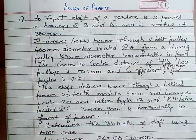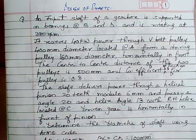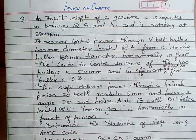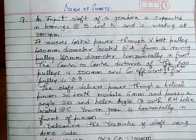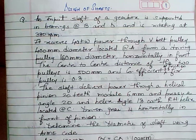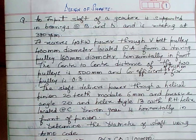Hello. In the last class we discussed the design of a shaft supporting a spur gear and a flat belt pulley. Today we will discuss how to design a shaft which is supporting a helical gear and a V-belt pulley. The example problem we are considering is the same example mentioned in the workbook supplied to you. Referring to the same example problem, we will try to draw the layout.